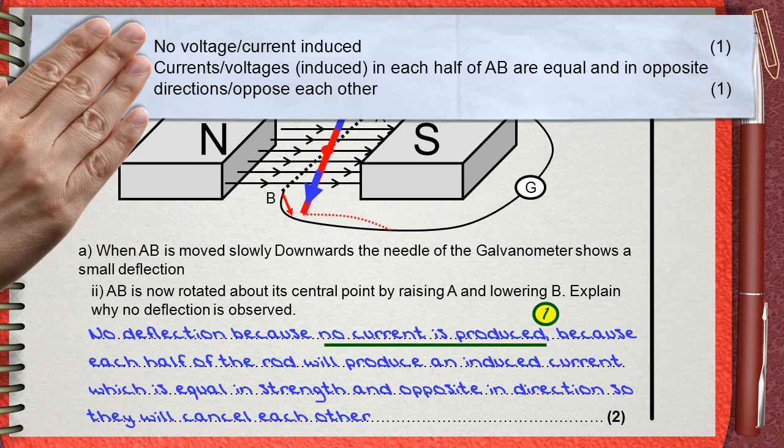No current is produced. The second mark is for explaining that voltages are induced in each half of AB. These are equal and in opposite direction, so they oppose each other.